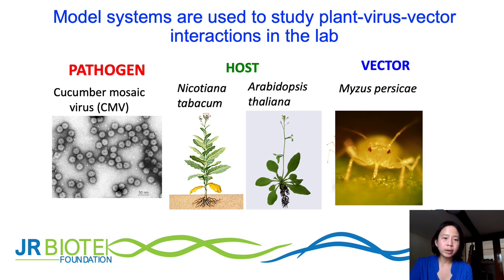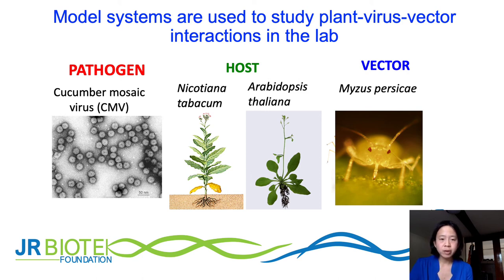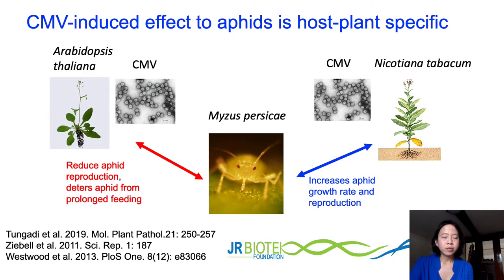In the lab we usually use model plants — plants that are easily grown, well studied, and easy to modify genetically. Tobacco and Arabidopsis are the two most common model plants. Myzus persicae, the green peach aphid, is one of the most well-studied aphids, and cucumber mosaic virus is commonly used. Here is an example of how the same virus and the same vector can cause quite different effects depending on the host plant. When Arabidopsis is the host, CMV infection actually reduces aphid fitness — aphids reproduce less and are deterred from feeding for long.